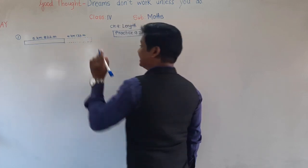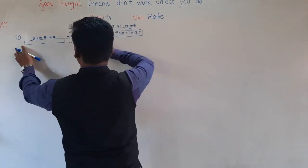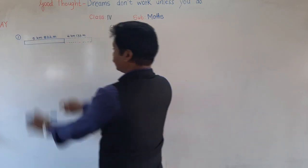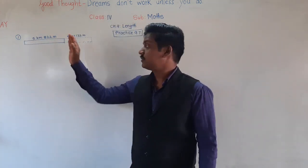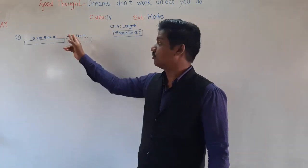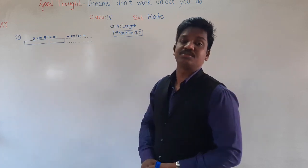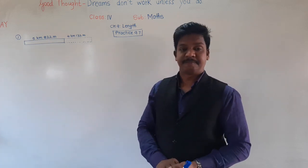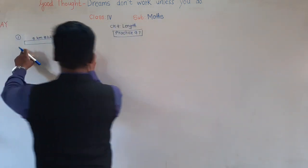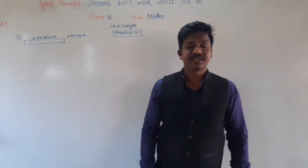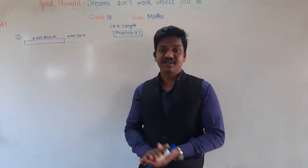This much it was increased. So now, what is the length of the canal? From here to here, the length was 5 kilometer 822 meter. After extending the length by 4 kilometer 132 meter, what is the length of that canal? To find the total length of the canal from this point to the end point, we have to add these two lengths.